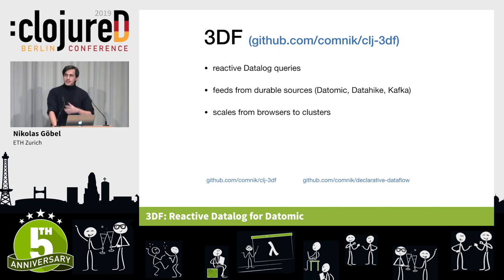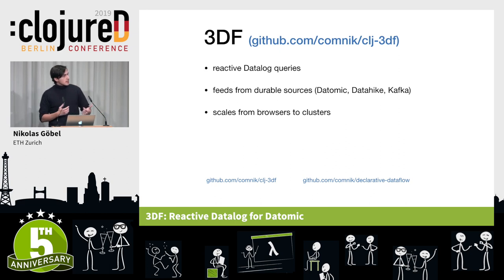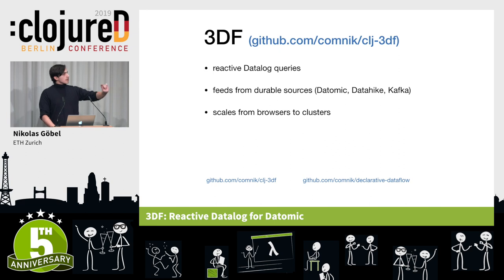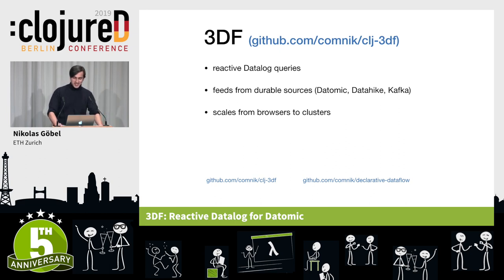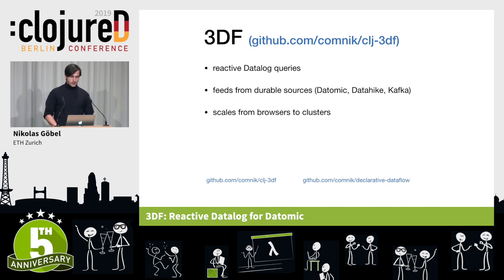What's been powering this in the backend is a system we've been developing at ETH and Clockworks for the better part of a year — it's called 3DF, it's on GitHub. What it does is pretty simple: it provides reactive Datalog queries in the sense I just showed. It sits on top of your existing databases — preferably databases that speak the language of additions, retractions, and facts, such as Datomic — but there are also alternatives like the Datahike project and Kafka. The interesting thing about 3DF is it's built on differential data flow technology, which gives nice operational properties: it's lean enough to run in a browser — we have WebAssembly builds — but it scales to proper big data setups with clusters of many machines.